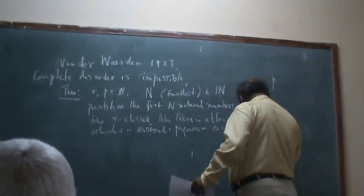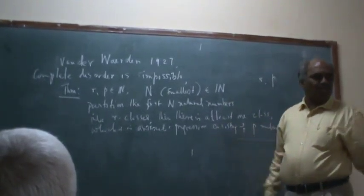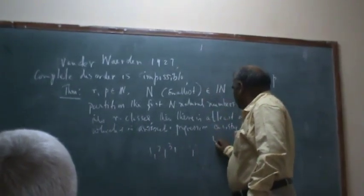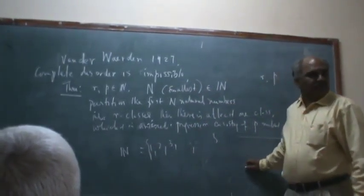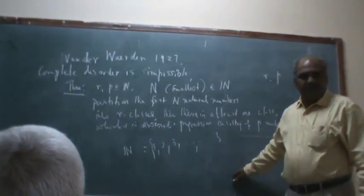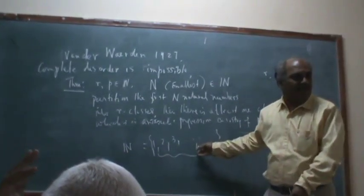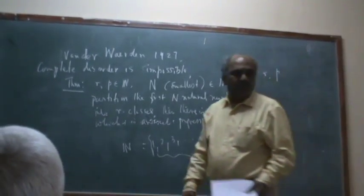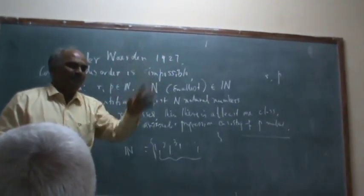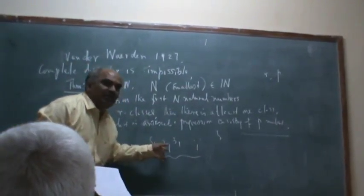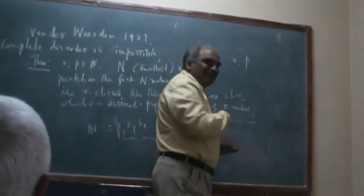You choose smallest n. You arbitrarily choose r and p. And of these two smallest. This is some n. Partition these natural numbers into r classes. Then there will be at least one class which is in arithmetic progression consisting of p numbers. In these r classes, then there is at least one class which is in a.p., which is in arithmetic progression, consisting of p numbers. In other words, he is trying to generalize some arithmetic structure of these natural numbers.